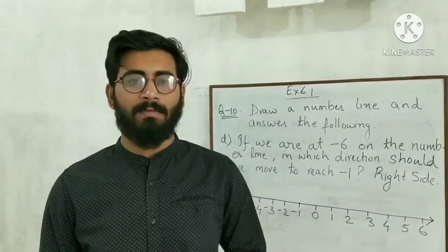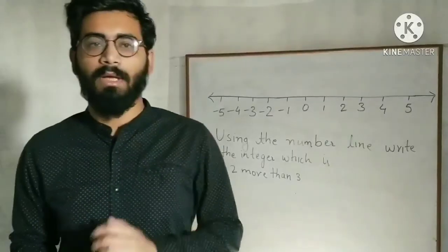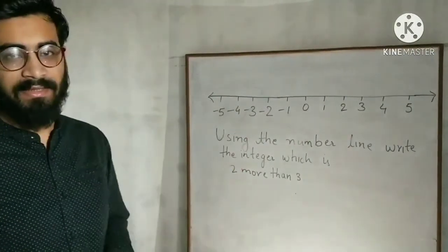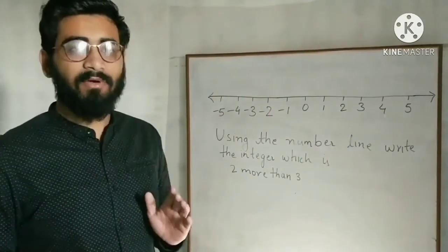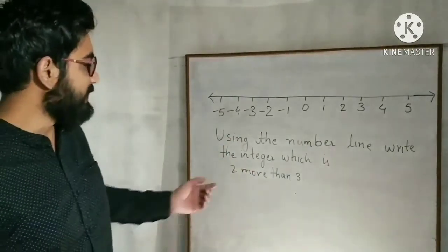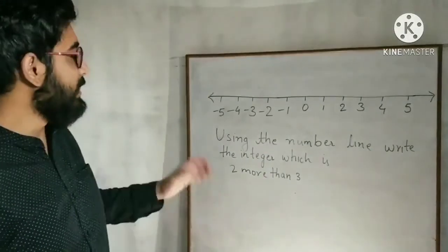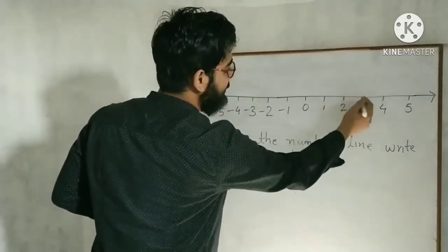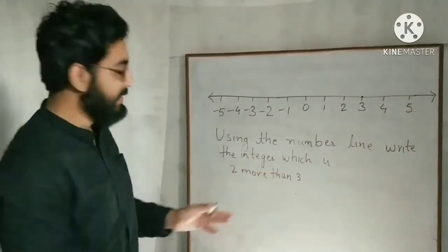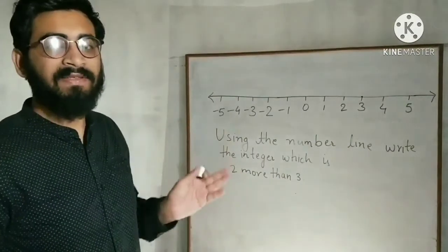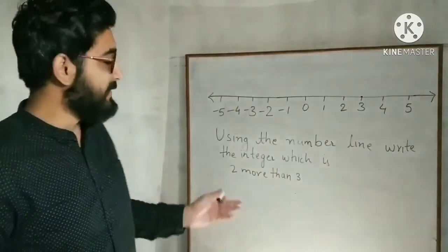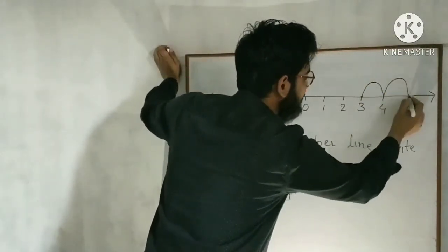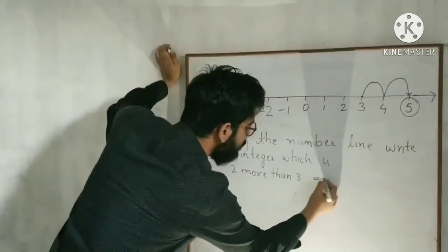Exercise 6.1 is now completed. Sometimes questions are like this: using the number line, write the integer which is 2 more than 3. Draw the number line and mark the integers. Find where 3 is on the number line. Since it says 'more than,' take steps to the right side — 2 steps right from 3. First step, second step — you reach at 5. So 2 more than 3 is equal to 5.